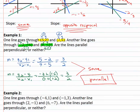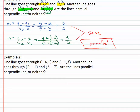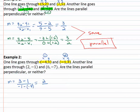In the next example, we look at a line through (−4, 1) and (−1, 3). Using the slope formula, y₂ = 3 minus y₁ = 1 over x₂ = −1 minus x₁ = −4. Three minus one is two; adding the opposite, negative one plus four is three. So the slope of the first line is two-thirds.